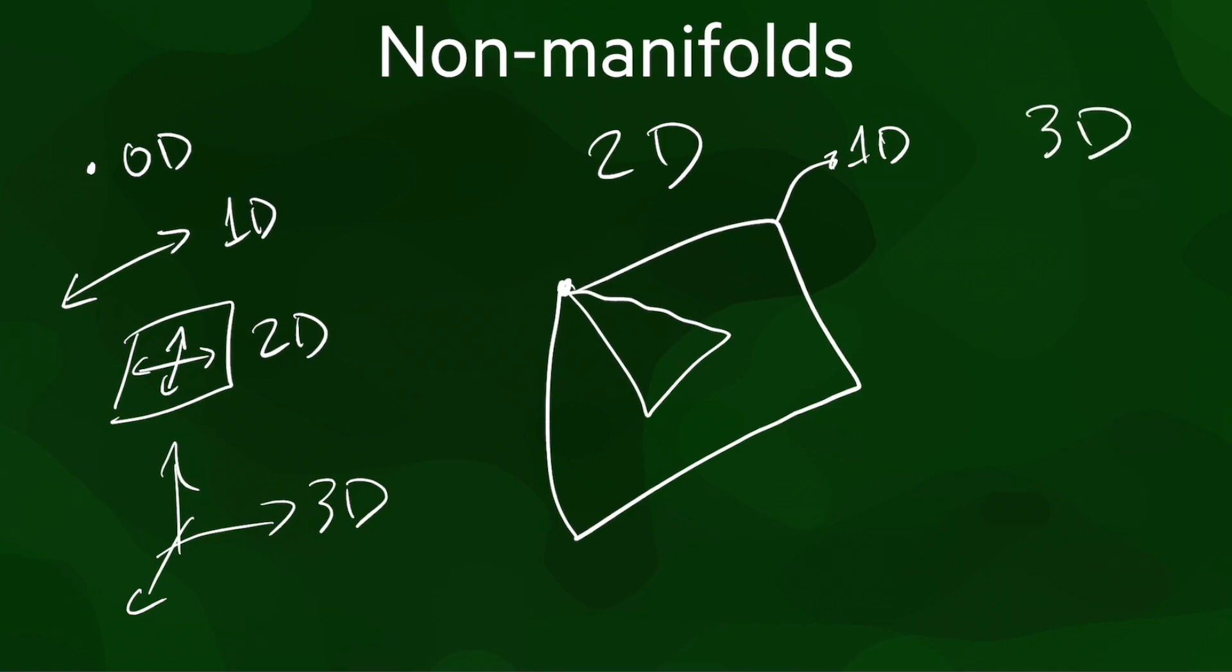In 3D, where we want to represent 3D volumes using the 2D surface that bounds them, we can have the same non-manifold vertices, but we can also have non-manifold edges.